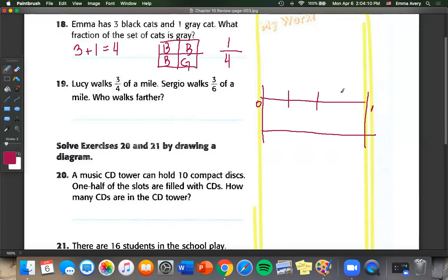So both of these number lines are going to start at zero and end at one. For three fourths, I have to put it into four separate pieces. So this is one fourth, two fourths, three fourths. And for six, I have to put that into six different pieces. So one sixth, two sixths, three sixths, four sixths, and five sixths.